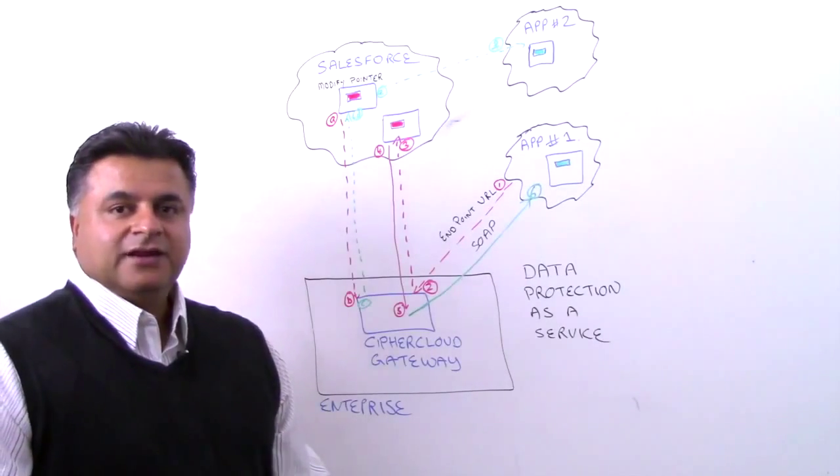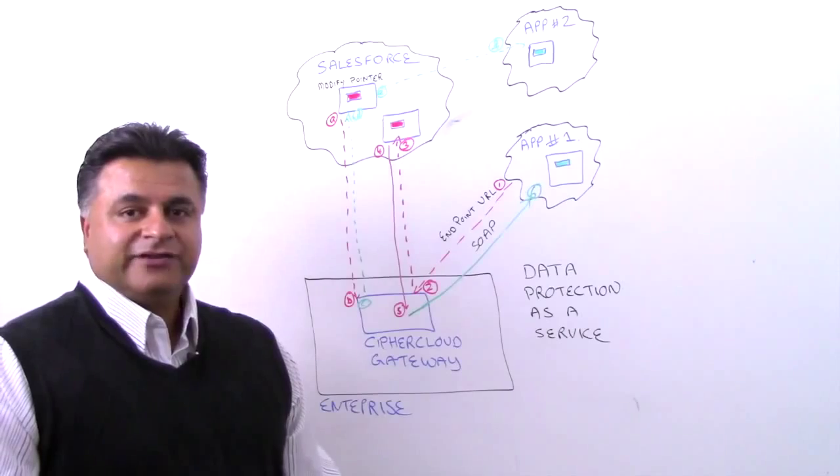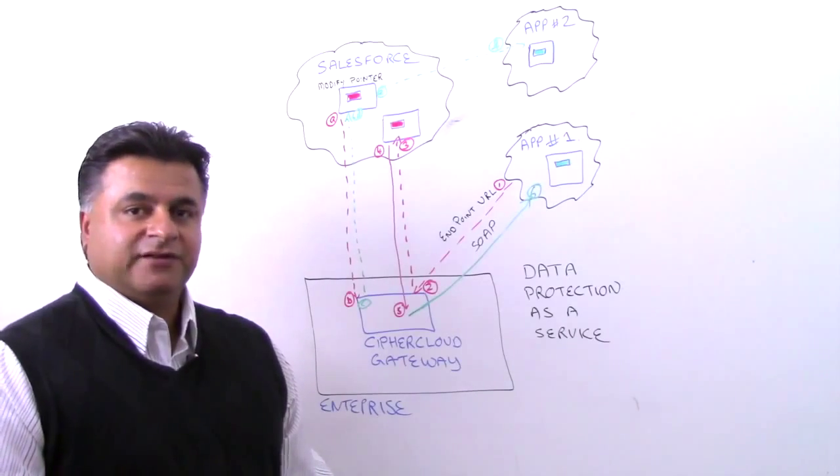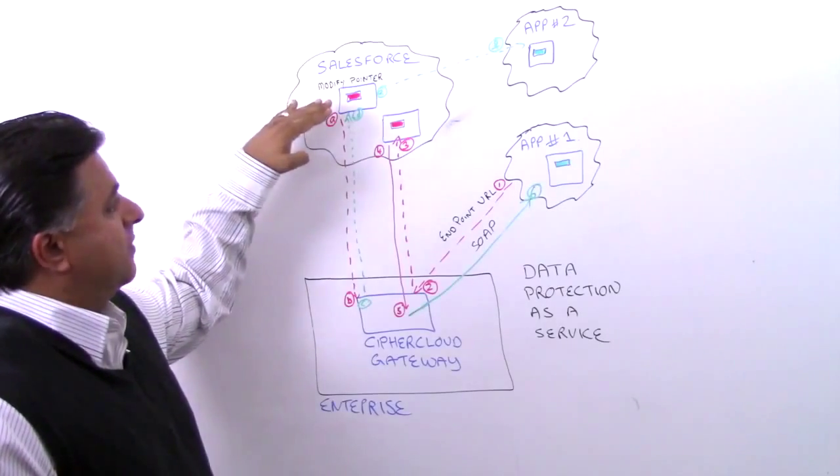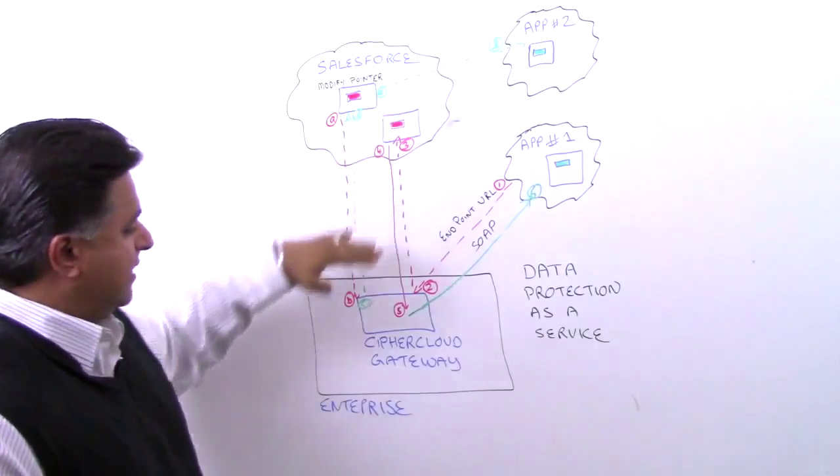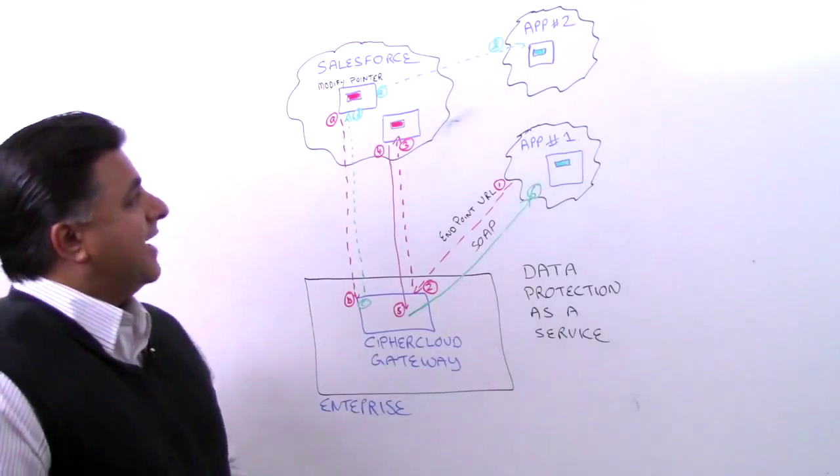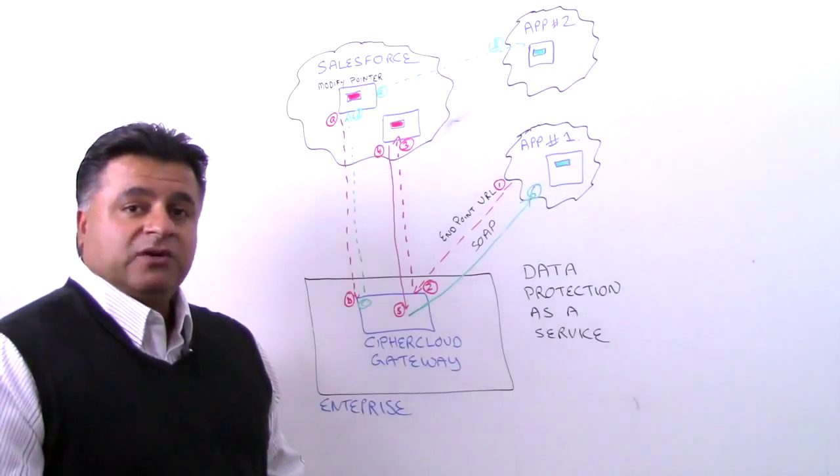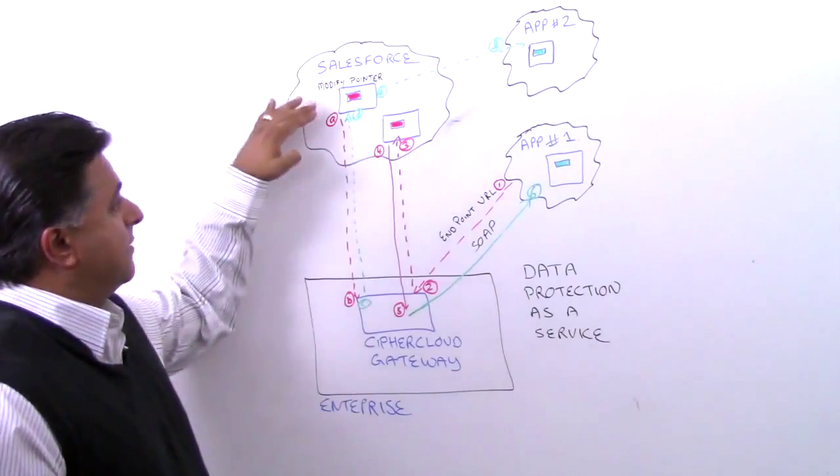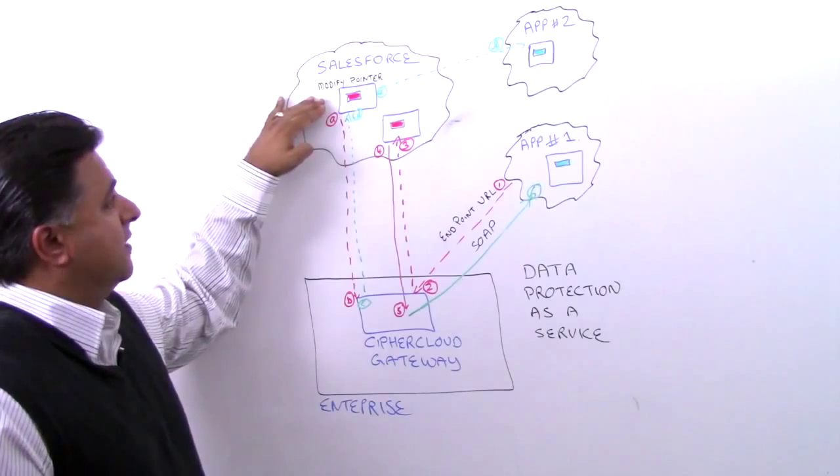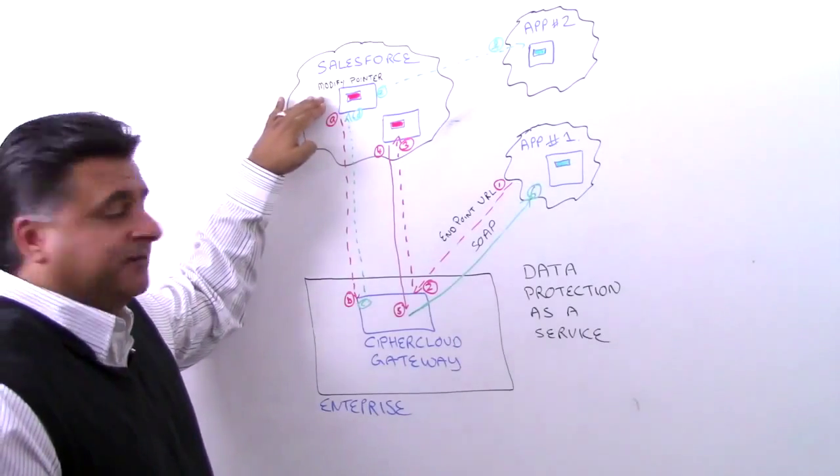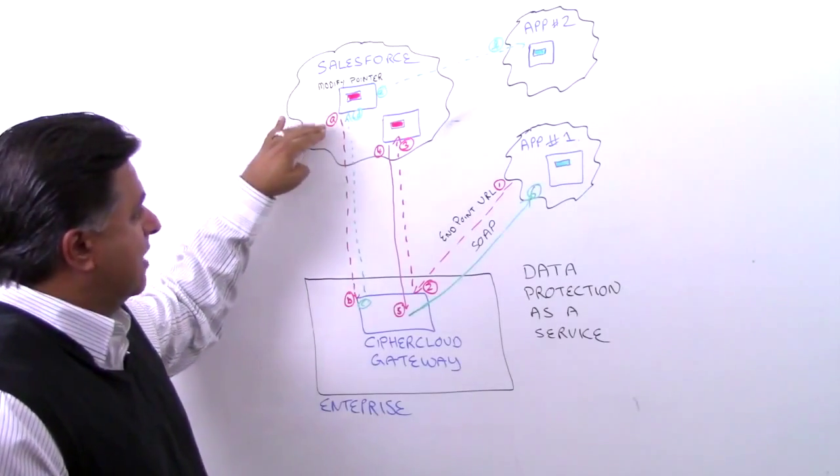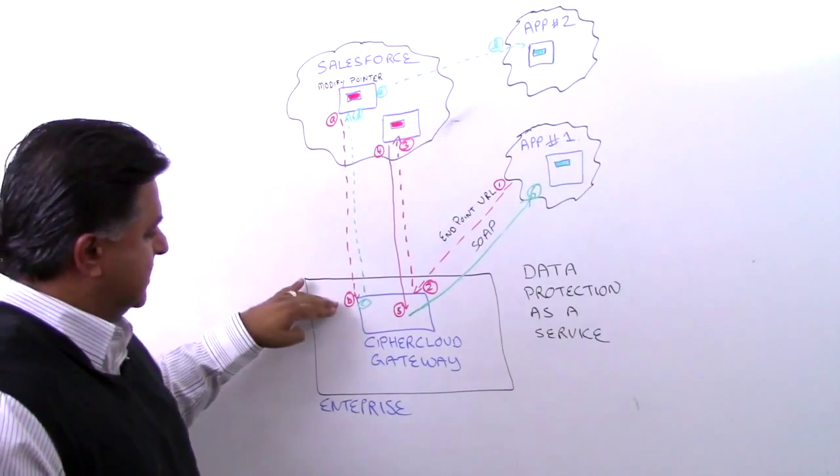There are cases where a third-party application that's part of the AppExchange of Salesforce may rely on that content and may not have the opportunity to actually connect directly to our gateway. In that case, we can actually work with Salesforce and modify the pointer within Salesforce itself. So whenever this kind of application requires this information, we actually point to our gateway first, as I've depicted in steps A and B.